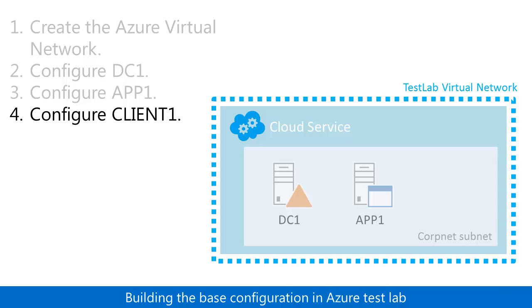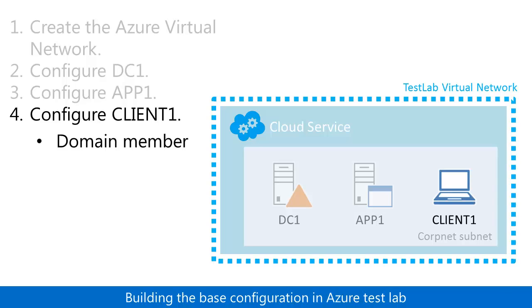In step four, you create a new virtual machine named Client1 and join it to the domain. You then verify access to the web and file share resources on App1.